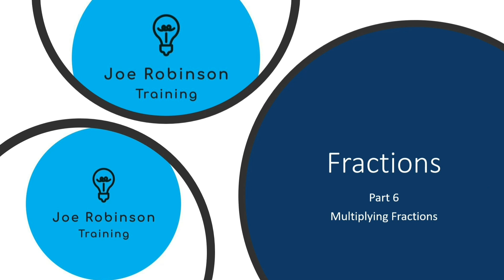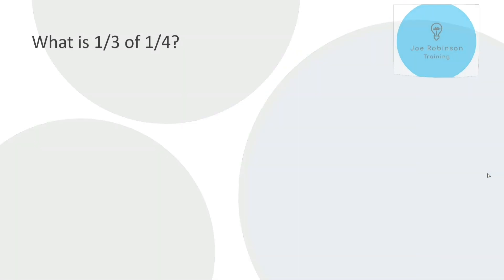Now we're going to start here. This isn't a traditional place to start with arithmetic and fractions, but we're starting here because it's actually the easiest way of carrying out arithmetic with fractions. So it starts off really nice and simple when we're multiplying and gets a little bit trickier as we go, but fear not because I'll guide you through step by step. So let's have a look at some of the principles involved in multiplying fractions together. So let's say we've got a question like this: what is one third of one quarter?